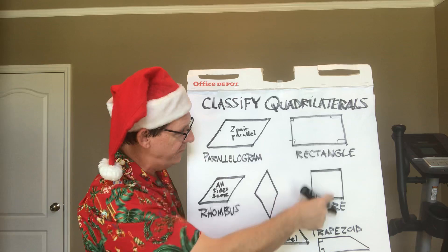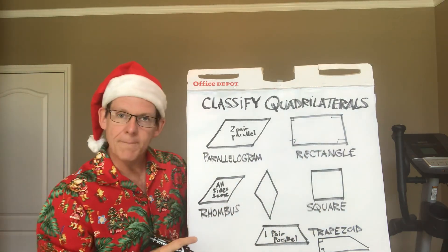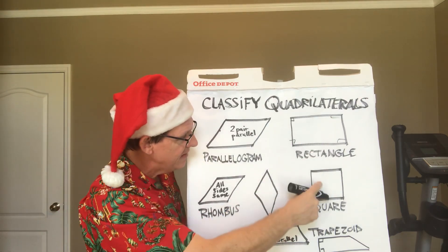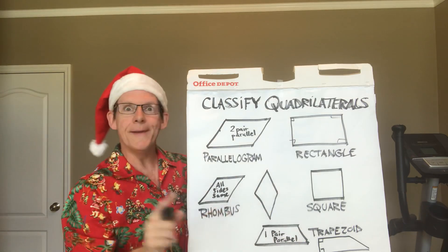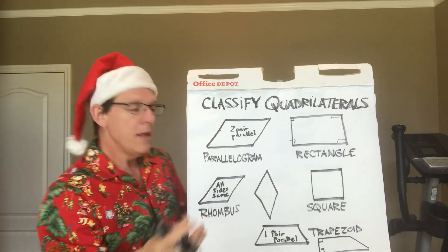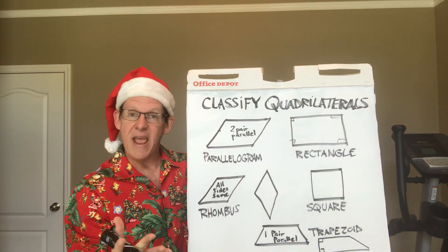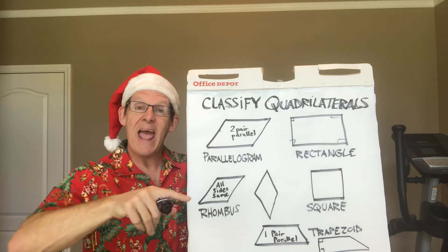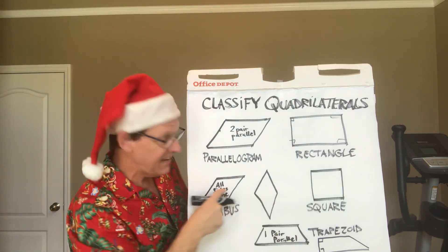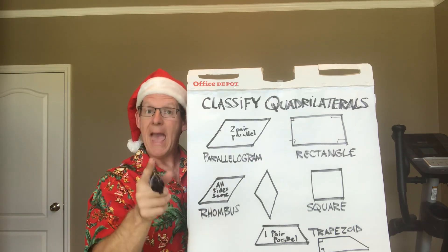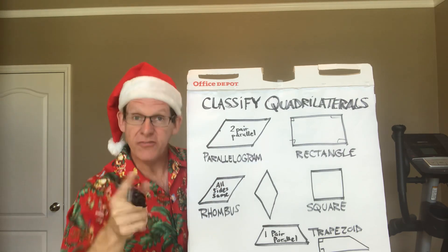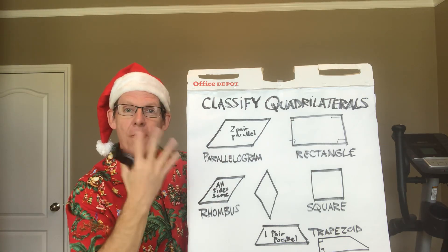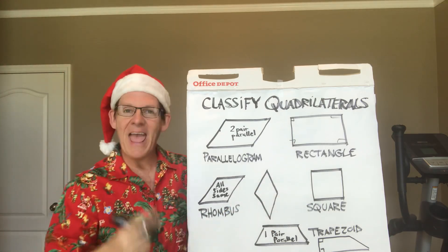Then we move to this one here. These look very similar to the others. It's called a square — I think we all knew that. A square is a type of rectangle because it has two pairs of parallel sides, all sides the same length, and four right angles. That's what makes a square a square.